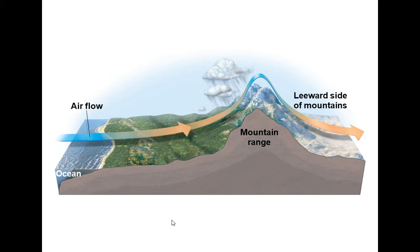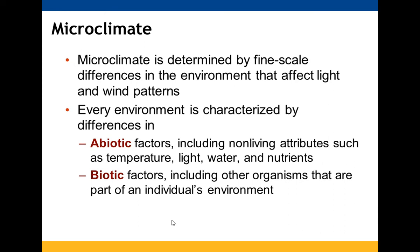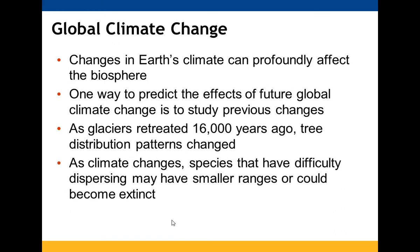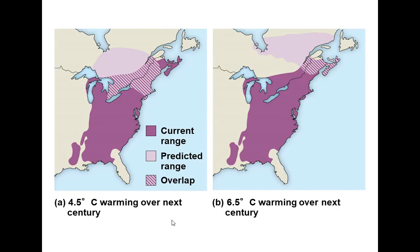On the leeward side you can see airflow moving from the ocean across mountain ranges. Microclimates are fine-scale differences influenced by both abiotic and biotic factors. Abiotic factors include temperature, light, water, and nutrients; biotic factors are the organisms making up that environment. Global climate change can have significant impacts on our biosphere. Looking at the past, when glaciers retreated 16,000 years ago, tree distribution patterns changed. Predictions suggest species with poor dispersal ability could face smaller ranges or extinction with a 4.5 to 6.5 degrees Celsius temperature increase over the next century.